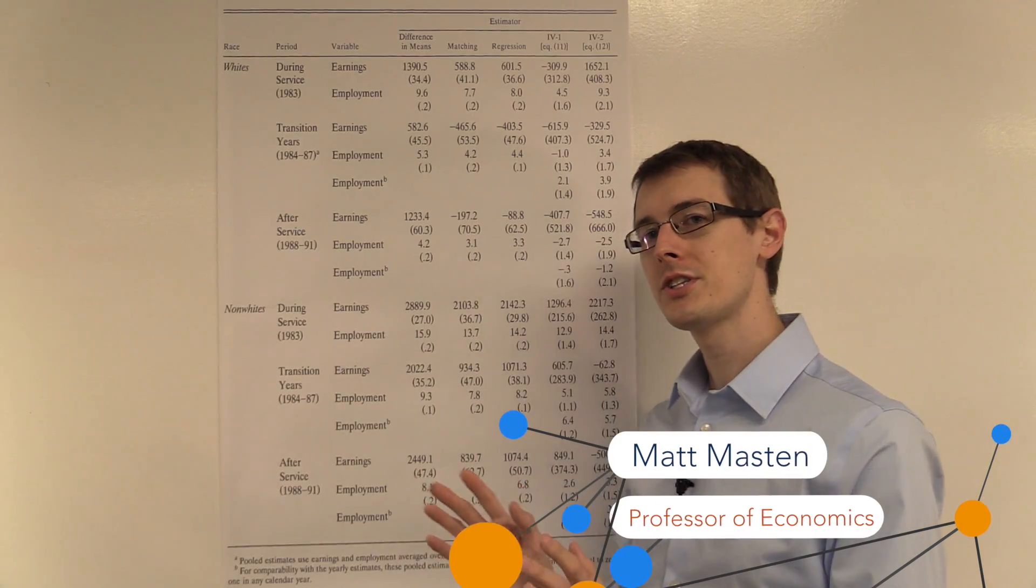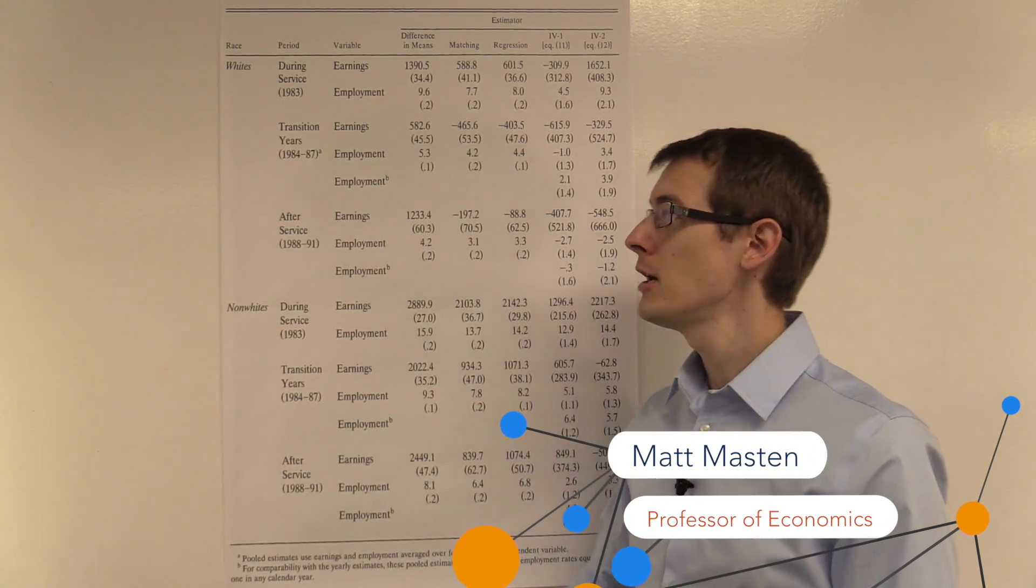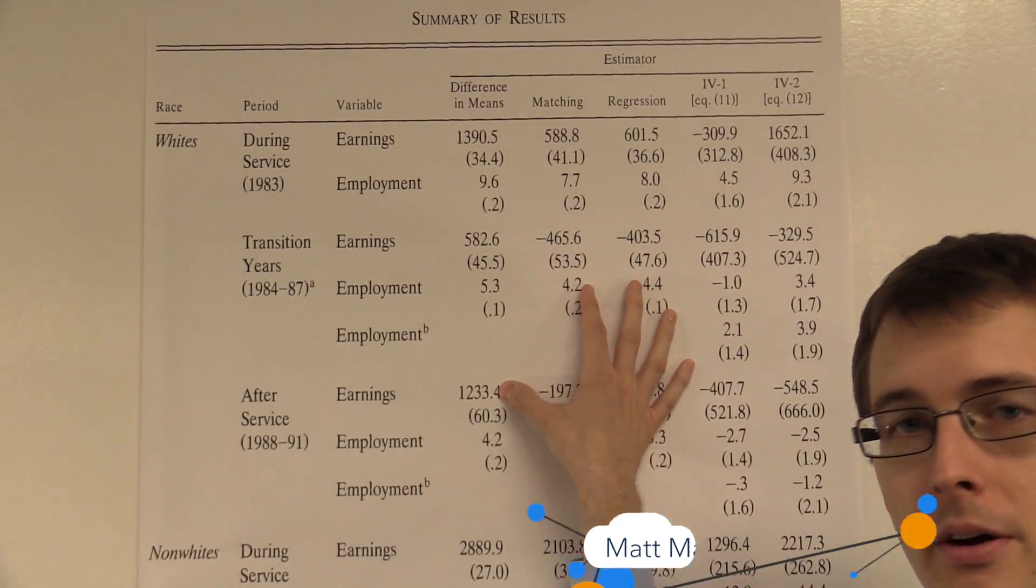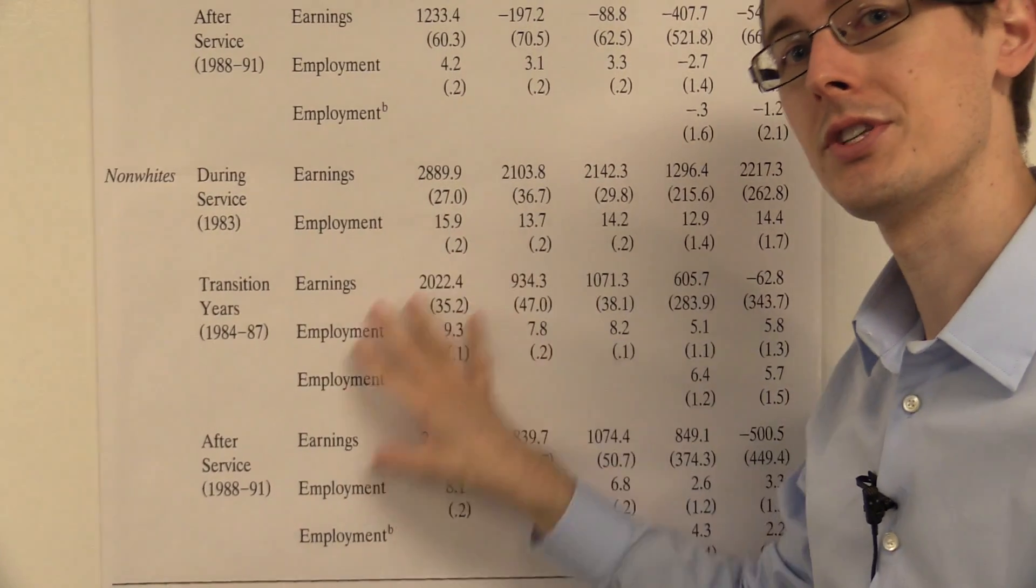Let's look at the results. First, Angrist is going to split his analysis by whites, with the results up here, and non-whites, with the results down here.